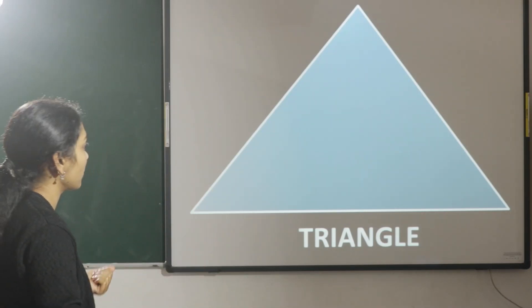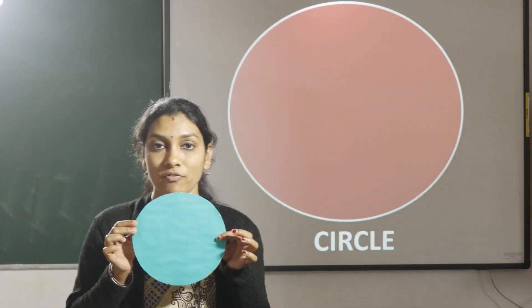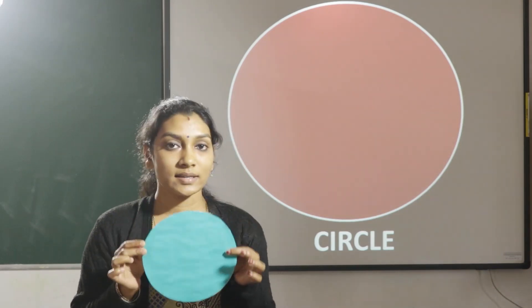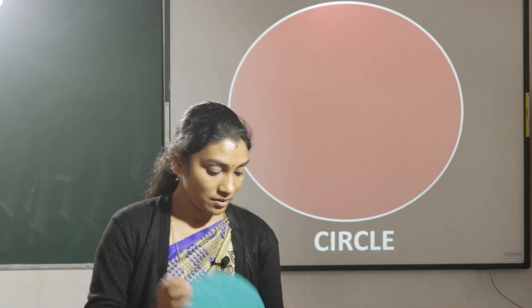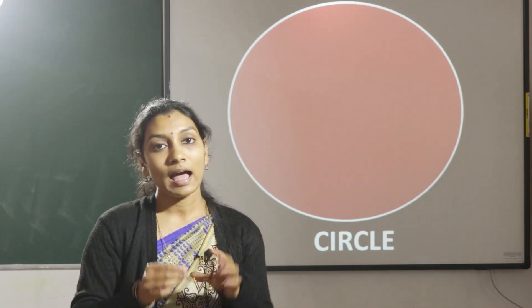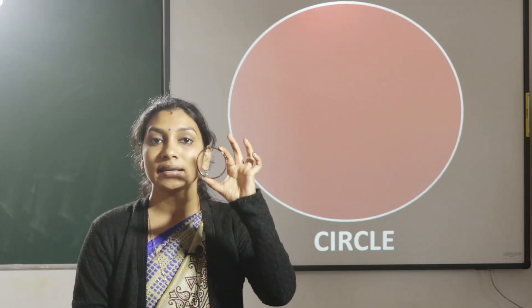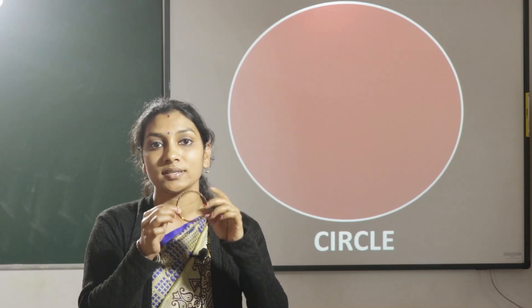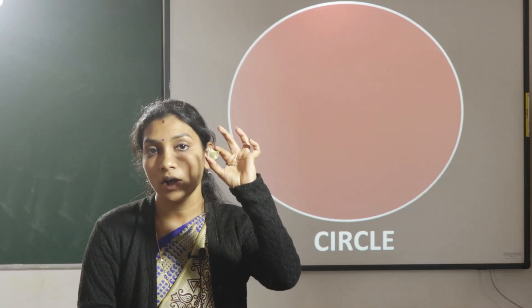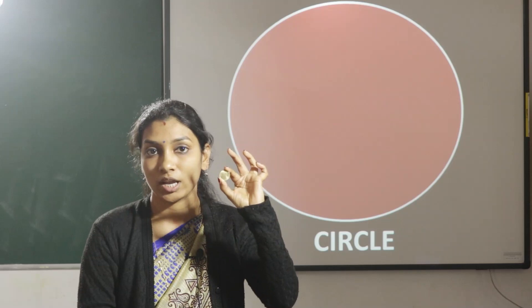Now let us see the shape of a circle. A circle has no sides — it is made of a curved line. Now here I have a bangle. So what's the shape of this bangle? It is a circle shape — it is round. Here I also have a coin. What's the shape of this coin? It is circular — it is round in shape.